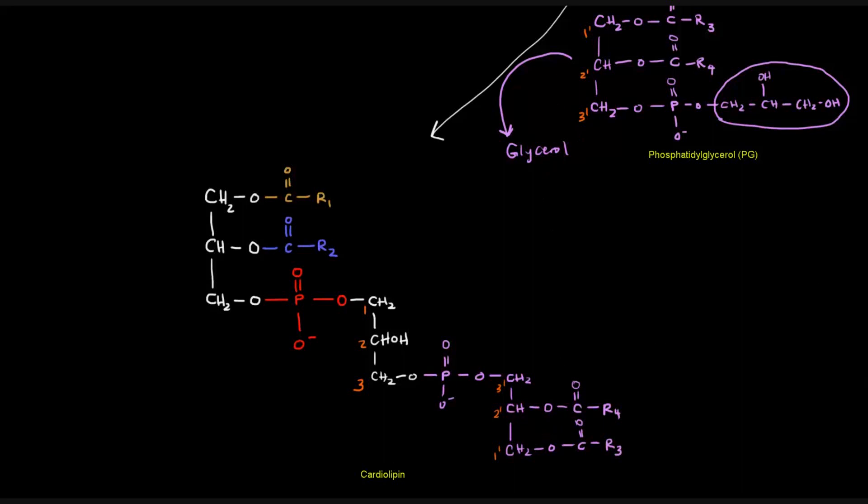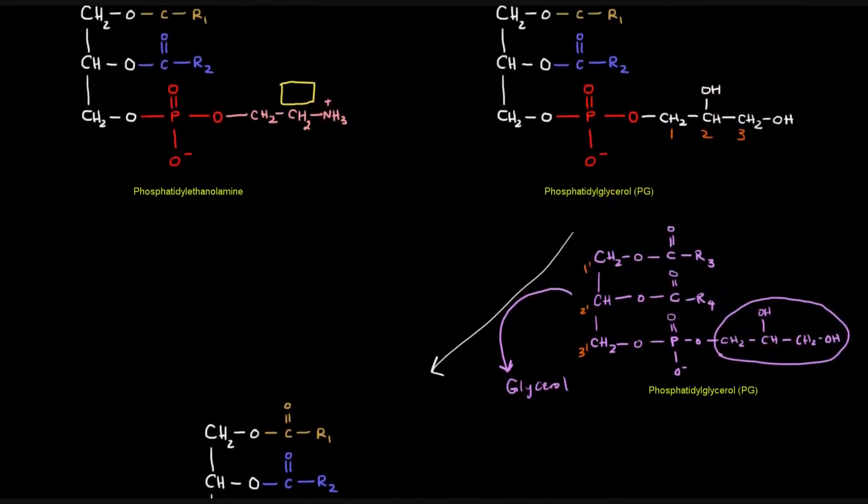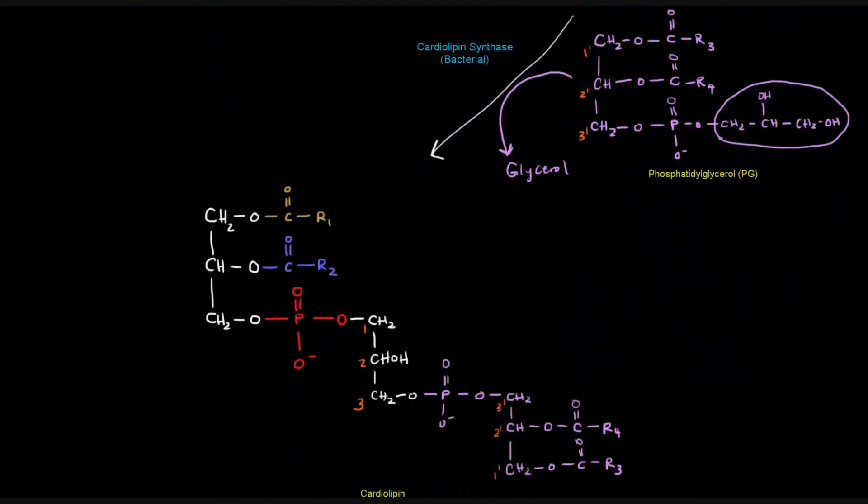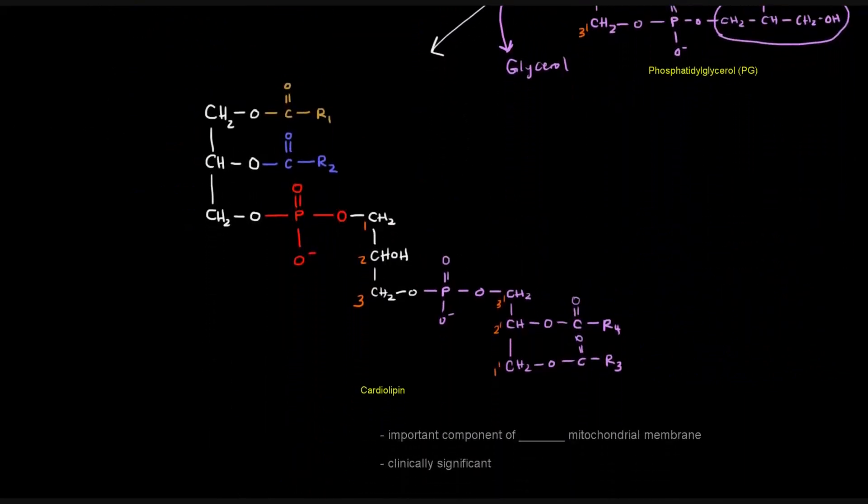is made by the connecting of these two phosphatidylglycerols, at least in bacteria, by an enzyme, cardiolipin synthase, specifically the bacterial version. And this molecule, cardiolipin, is an important component in the inner mitochondrial membrane as well as bacterial membranes. And it's also clinically significant because of its presence in bacterial membranes.